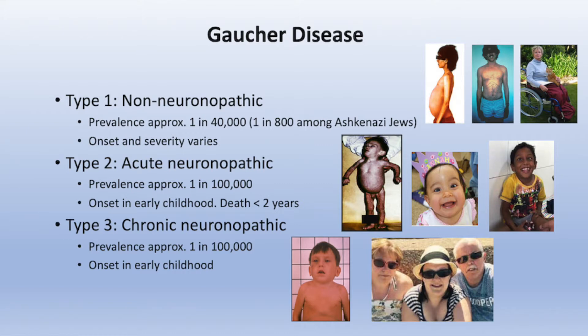Type 1 disease also shows wide variability in severity. One picture shows a severely affected 15 to 16-year-old girl, while a young man of similar age has almost undetectable disease. A third patient, treated during an era when treatment was unavailable, suffered severe bone disease that left her confined to a wheelchair.